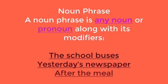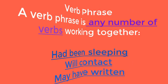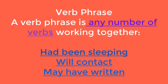The first type is noun phrase. A noun phrase is any noun or pronoun along with its modifiers. Examples: 'the school buses,' 'yesterday's newspaper,' 'after the meal.' The second type is verb phrase. A verb phrase is any number of verbs working together. Examples: 'had been sleeping,' 'will contact,' 'may have written.'